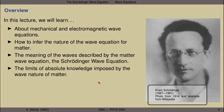In this lecture, we will learn the following things. We'll take a look at mechanical and electromagnetic wave equations to inspire our thinking about matter waves. We'll learn how to infer the nature of the wave equation for matter from an exercise involving the conservation of energy. We'll look at the meaning of the waves described by the matter wave equation, the so-called Schrödinger wave equation. And finally, we'll look at the limits of absolute knowledge that are imposed by the wave nature of matter.